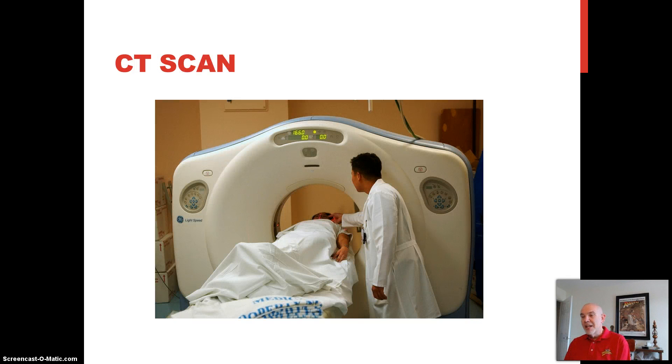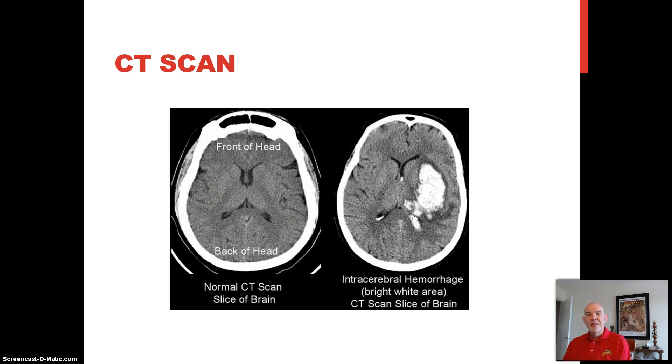In a CAT scan, you lie on a table like this and you slide into what looks like a donut ring. And the machine literally shoots x-rays through your head from different angles, and it constructs a three-dimensional picture of the brain. Here is a cross-sectional image of a normal CAT scan contrasted with an abnormal CAT scan.